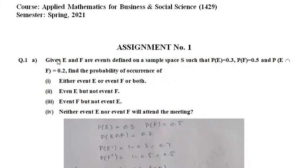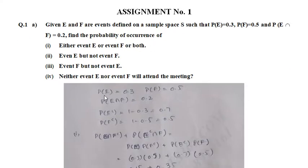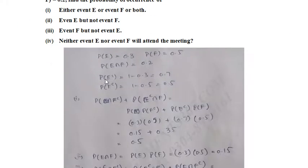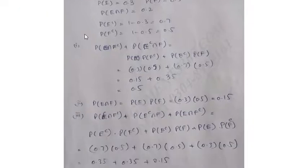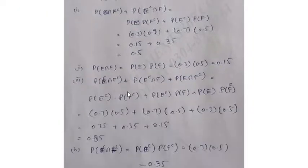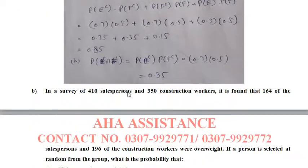Question No.1, you have two events given E and F and have a sample space. Now you have to find out that either event E or event F or both are occurring, event E but not event F, event F but not event E, or neither event E nor event F will attend the meeting. You have to find out their probabilities 1, 2, 3. All these probabilities find out and explain them.